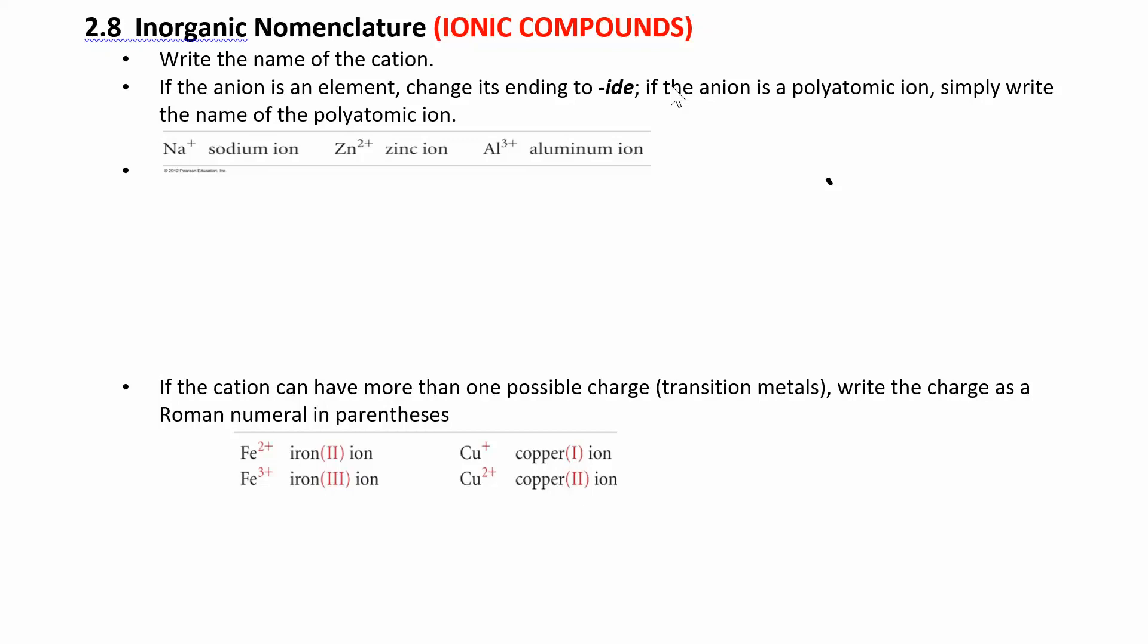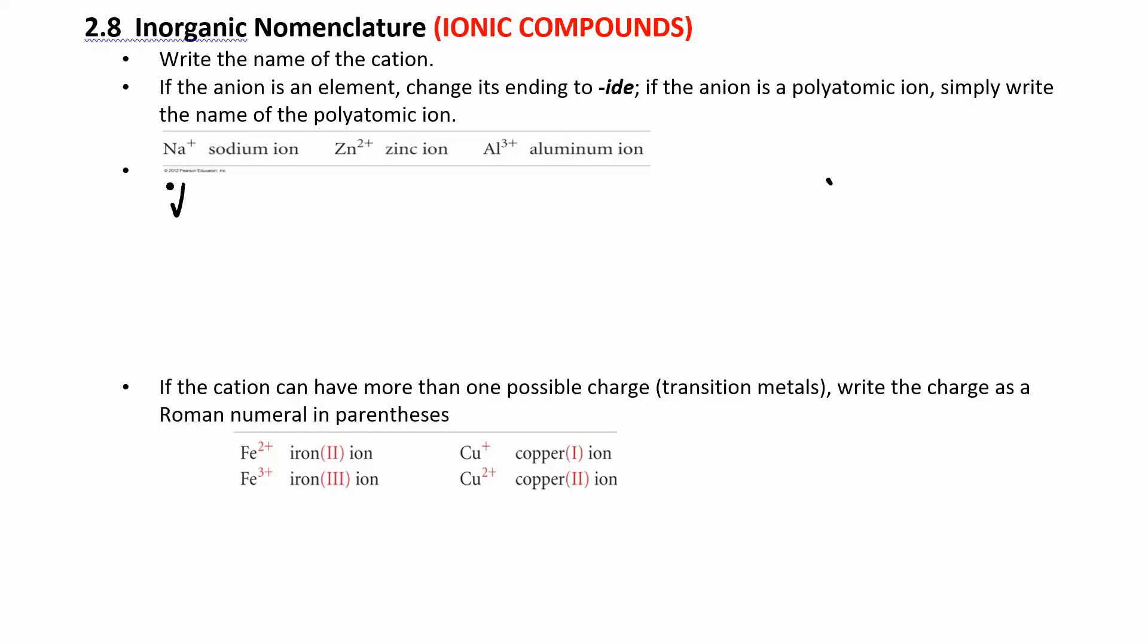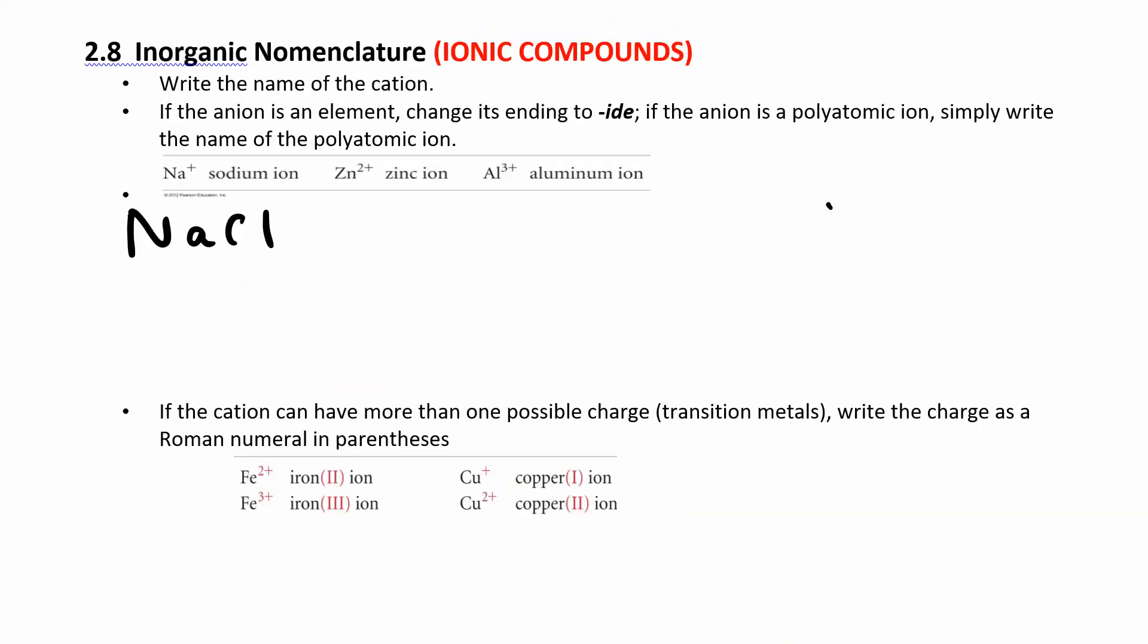So if you had something, like I said, you already know some of these. So if you had something like NaCl. How do you name NaCl? Na is sodium and Cl is chlorine. So when you put this together you get sodium chloride. So how did we get that name? We just changed the anion ending to -ide. So we have here sodium chloride.